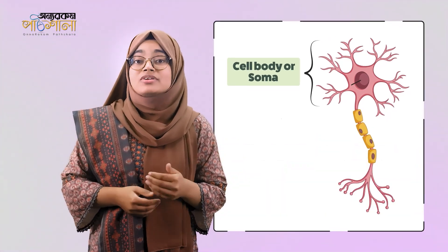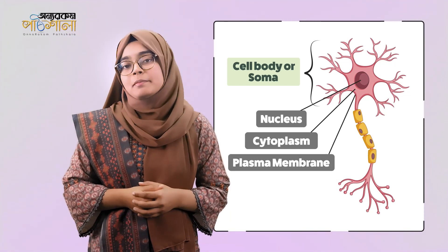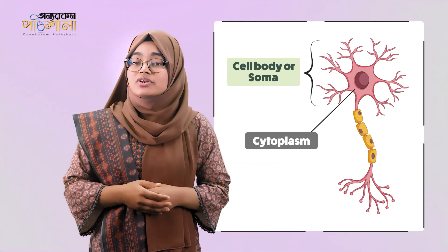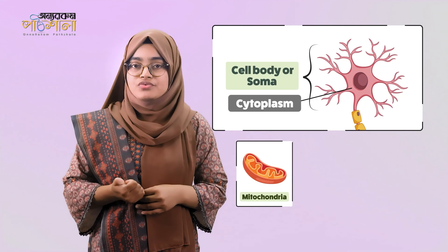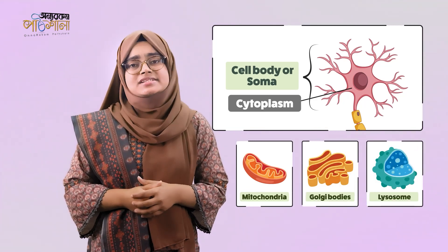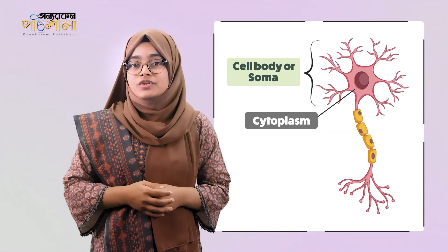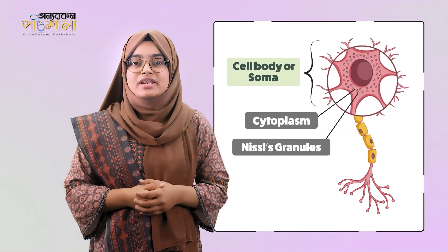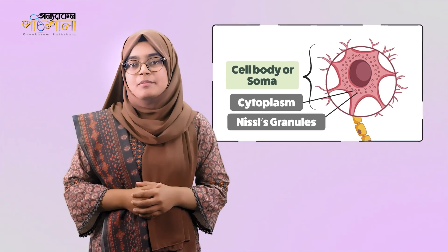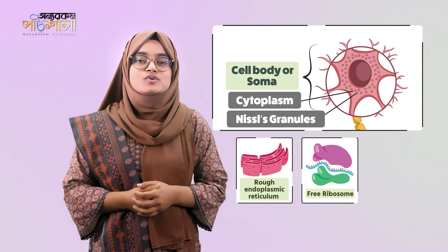The cell body contains a nucleus and cytoplasm that remains bound by a plasma membrane. The cytoplasm contains mitochondria, Golgi body, lysosome, and other organelles just as in a typical animal cell. But the special feature of the neuron is the presence of Nissl granules in the cytoplasm, which are made up of rough endoplasmic reticulum and free ribosomes.